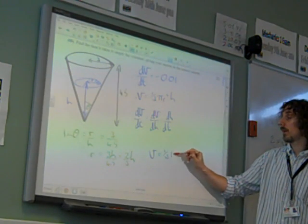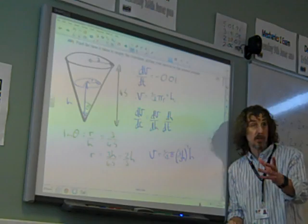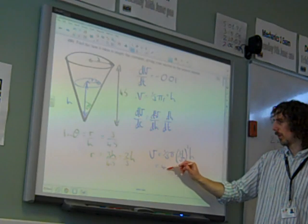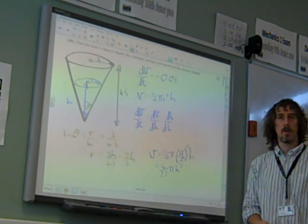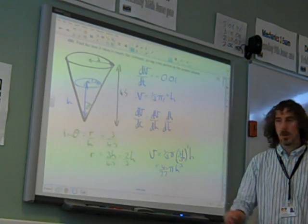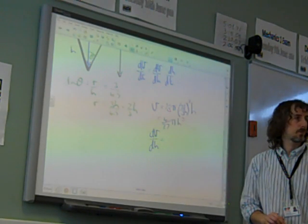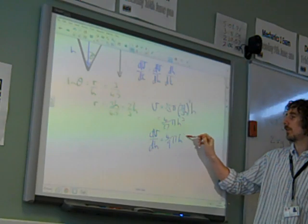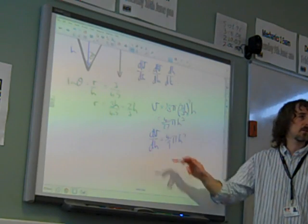V is 1 third of pi times r squared h. Actually, now we've got V in terms of h. We've got V is, well, actually this is, what is it, 4, and this would be over 27. Pi h cubed, because that's 2 thirds squared is 4 ninths times the third that we have there. So when we differentiate this to dV by dH, we get 4 ninths of pi h squared. That's multiplied by the 3, so it's 12 over 27, which cancels down to 4 ninths.